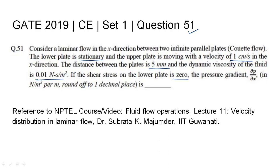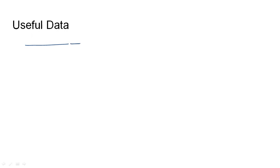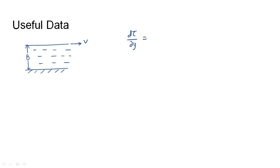The relevant NPTEL reference has been listed. In a Couette flow situation where the top plate is moving with a velocity V and the bottom plate is fixed and stationary, the distance between the two plates is assumed to be B, with a fluid field in between. It is known that the rate of change of shear stress in the vertical direction is equal to the rate of change of pressure along the x-direction, where y is measured vertically and x is measured horizontally.